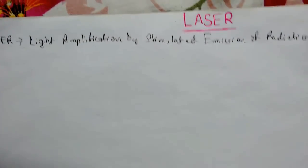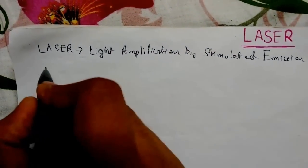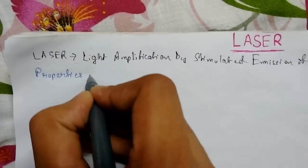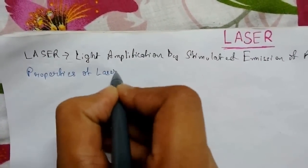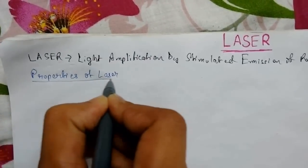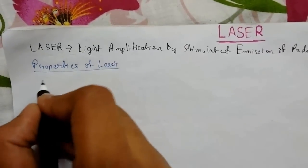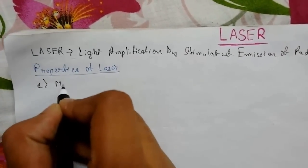Let us see some properties associated with laser and how it differs from ordinary light. At number one we have monochromaticity.